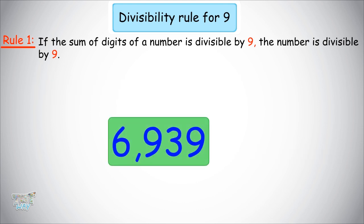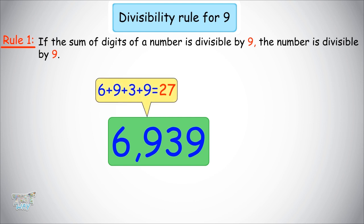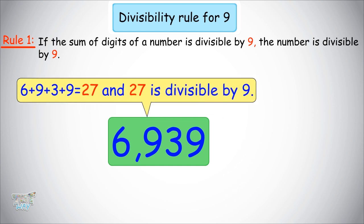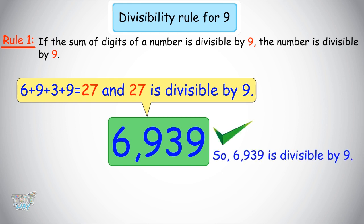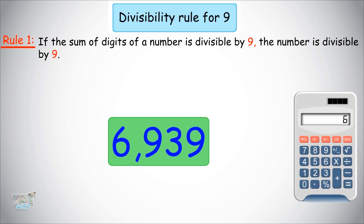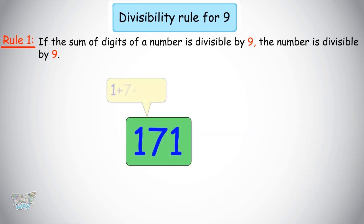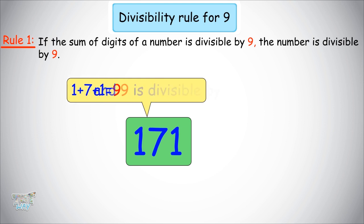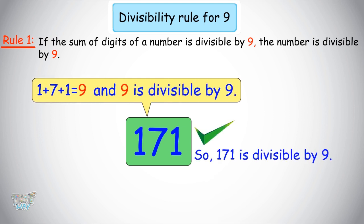Next number is 6,939. Let's find the sum of the digits: 6 plus 9 plus 3 plus 9, which comes out to be 27. 27 is divisible by 9, so this number is divisible by 9. Let's check with our calculator: 6,939 divided by 9 comes out to be 771. So yes, this number is divisible by 9 — the rule works. So friends, we have learned the divisibility rule for 9. We just find the sum of the digits, and if the sum of digits is divisible by 9, the number is divisible by 9.